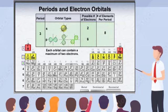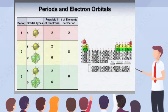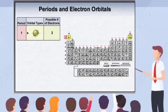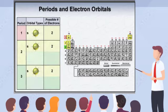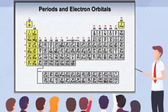This same pattern exists for the third energy level in the third period, which has a total of eight elements from sodium to argon. Note the pattern starting to develop, and how this relates to the shape of the periodic table. Groups 1A and 2A add electrons in S orbitals, and groups 3A through 8A add electrons in P orbitals. Groups 1A and 2A are therefore known as the S block, and groups 3A through 8A are known as the P block.